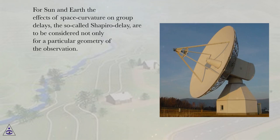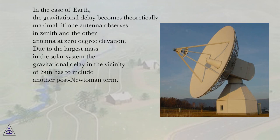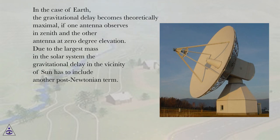For Sun and Earth, the effects of space curvature on group delays — the so-called Shapiro delay — are to be considered not only for a particular geometry of the observation. In the case of Earth, the gravitational delay becomes theoretically maximal if one antenna observes in zenith and the other antenna at zero degree elevation. Due to the largest mass in the solar system, the gravitational delay in the vicinity of the Sun has to include another post-Newtonian term.